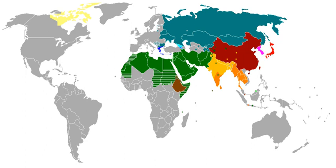A writing system is any conventional method of visually representing verbal communication. While both writing and speech are useful in conveying messages, writing differs in also being a reliable form of information storage and transfer. Writing is usually recorded onto a durable medium, such as paper or electronic storage, although non-durable methods may also be used, such as writing on a computer display, on a blackboard, in sand, or by skywriting.